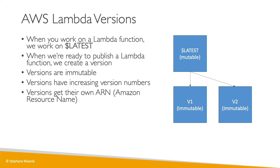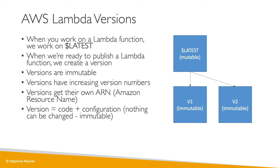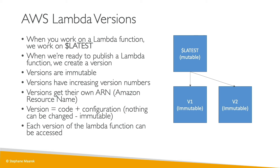Each version is independent and will get its own ARN (Amazon Resource Name). So a version is your code and your configuration — nothing can be changed, it's immutable. Each Lambda function version can be accessed, as well as $LATEST. This is great to iterate and mark your advances into releases of your Lambda function.